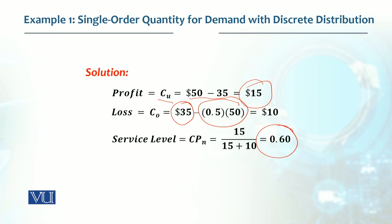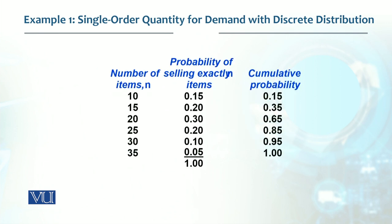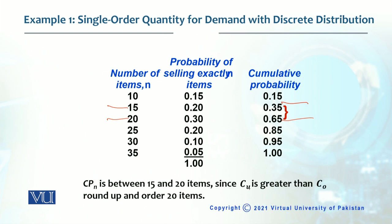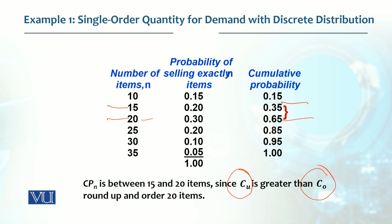Now we check this 60 percent against the table. The 60 percent falls between 35 percent and 65 percent, so we either place an order of 15 or 20 units. Since the cost of understock is higher than the cost of overstock, we go with the higher quantity. If the cost of overstock were higher, we would choose 15, but because understock cost is greater, we don't want stock-outs, so we choose the higher quantity which is 20 units.